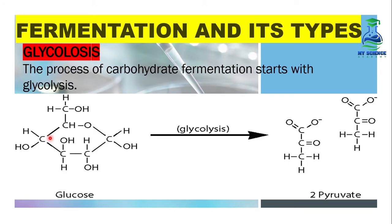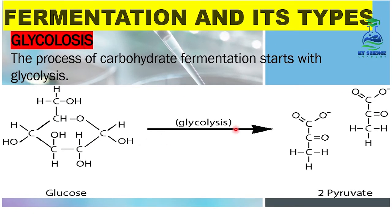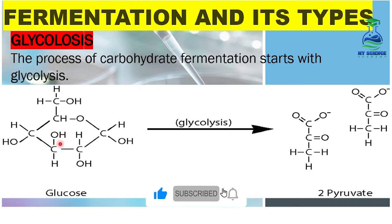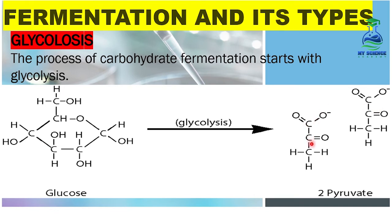Glycolysis — the process of carbohydrate fermentation starts with glycolysis, which means the breakdown of glucose. 'Glyco' means glucose, while 'lysis' means breakdown. In this diagram, the process of glycolysis can be observed. This is the glucose molecule, which has 6 carbons, 12 hydrogens, and 6 oxygens. In glycolysis, this 6-carbon glucose molecule breaks down into 2 pyruvate molecules, each containing 3 carbons.